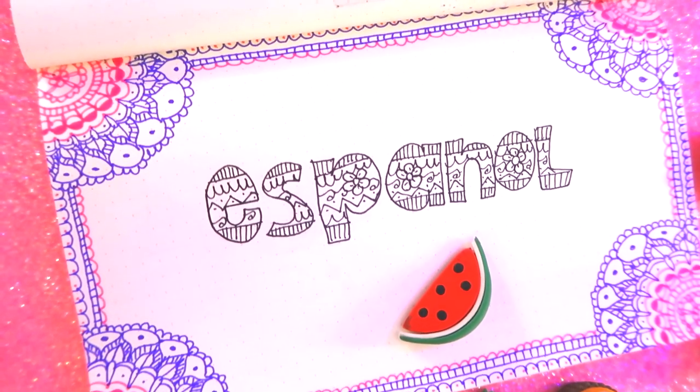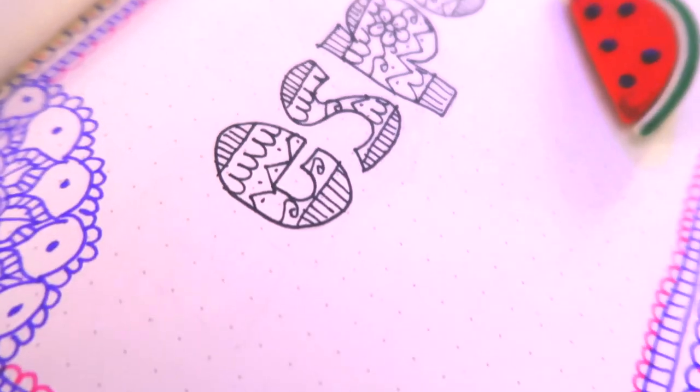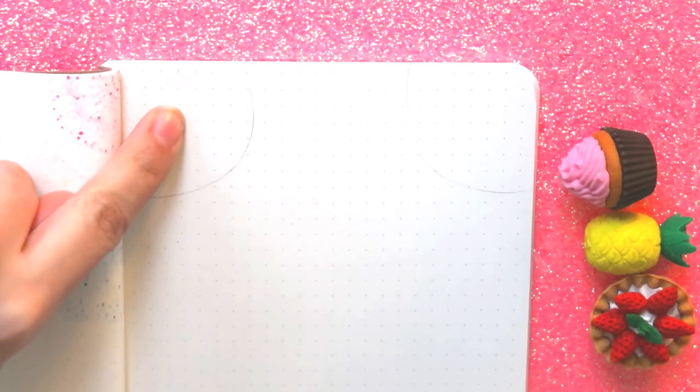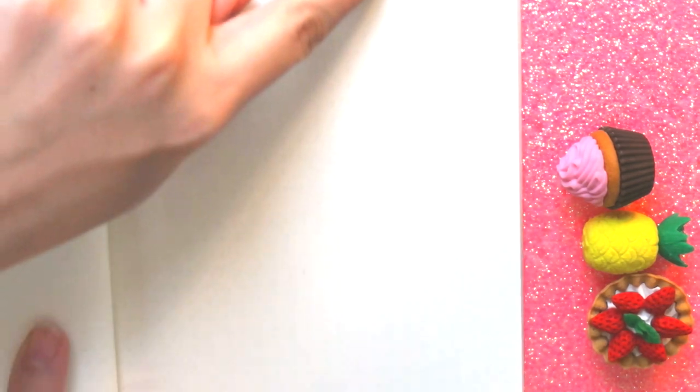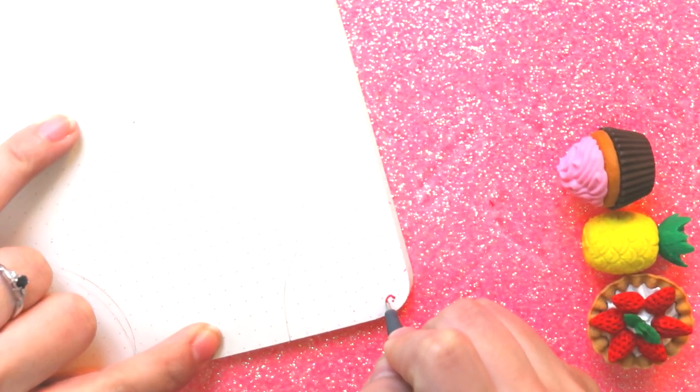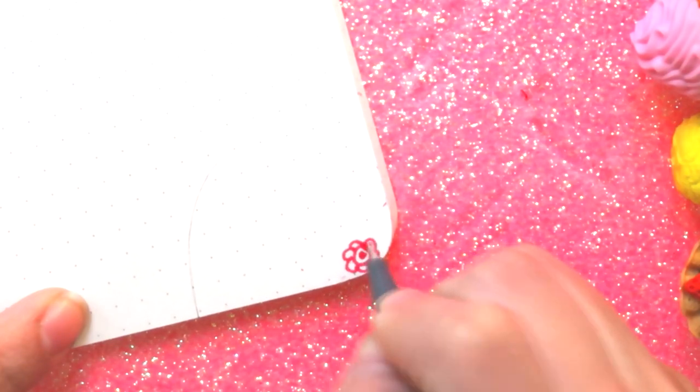For our next cover we're going to make these little mandalas in the corners and with a very cool border. Like our last cover, I'm going to trace here four little circles in the four corners. And I'm going to start making my little mandalas. I'm going to make them all the same, so make one first and then continue with the others.